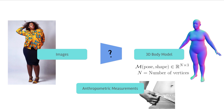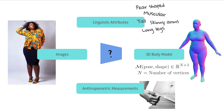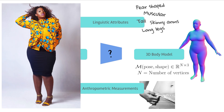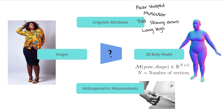Our insight is to use language. We have many words to describe body shape. Look at this woman — how would you describe her shape? I would describe her as tall, curvy, and pear-shaped. We can even provide a rating of how tall and how curvy she is. Surprisingly, we show that we can use linguistic descriptions of body shape to train a metrically accurate body shape regressor.